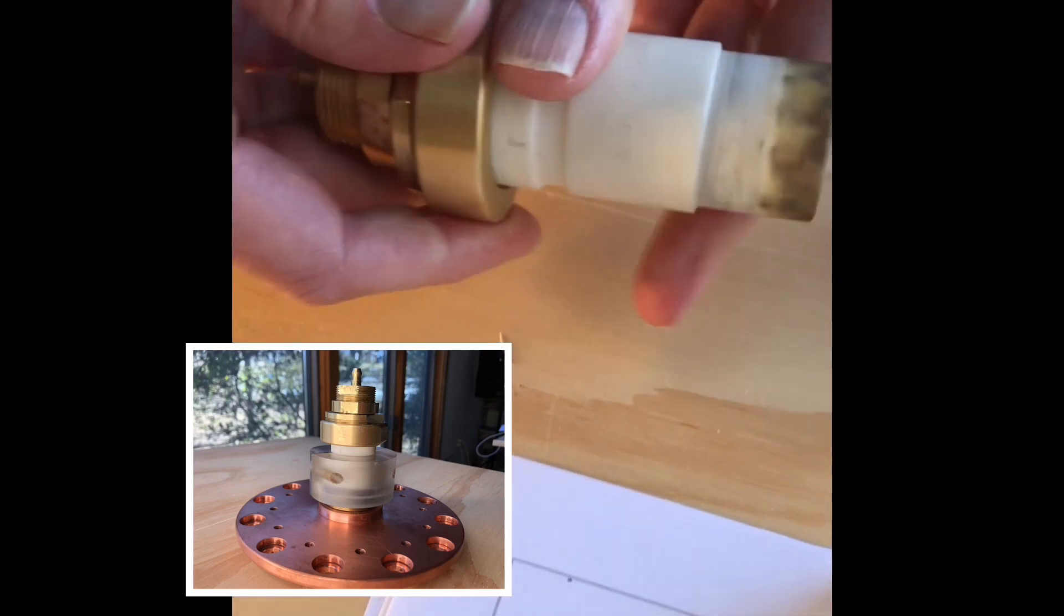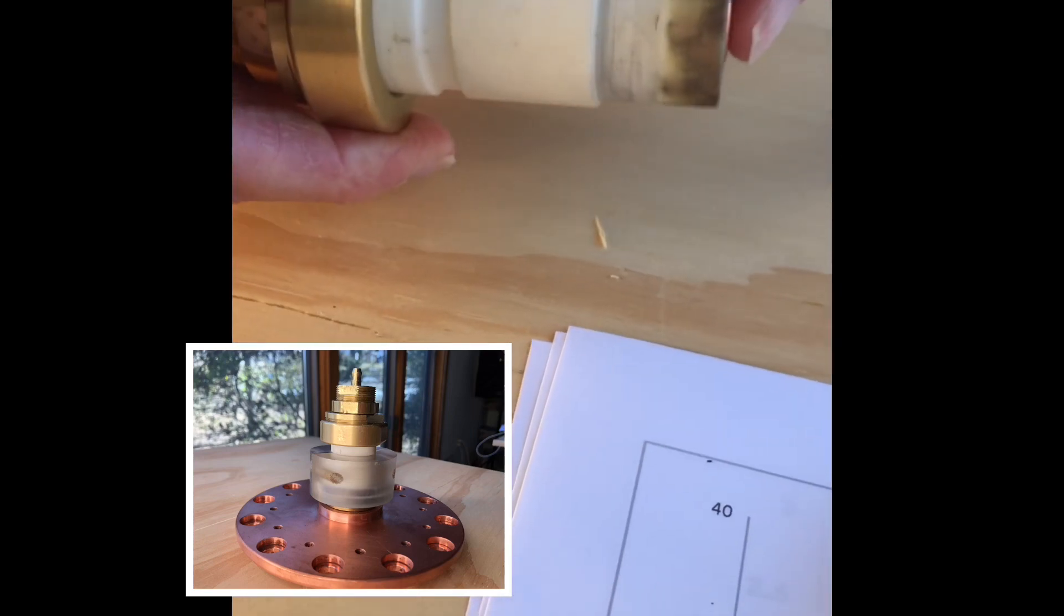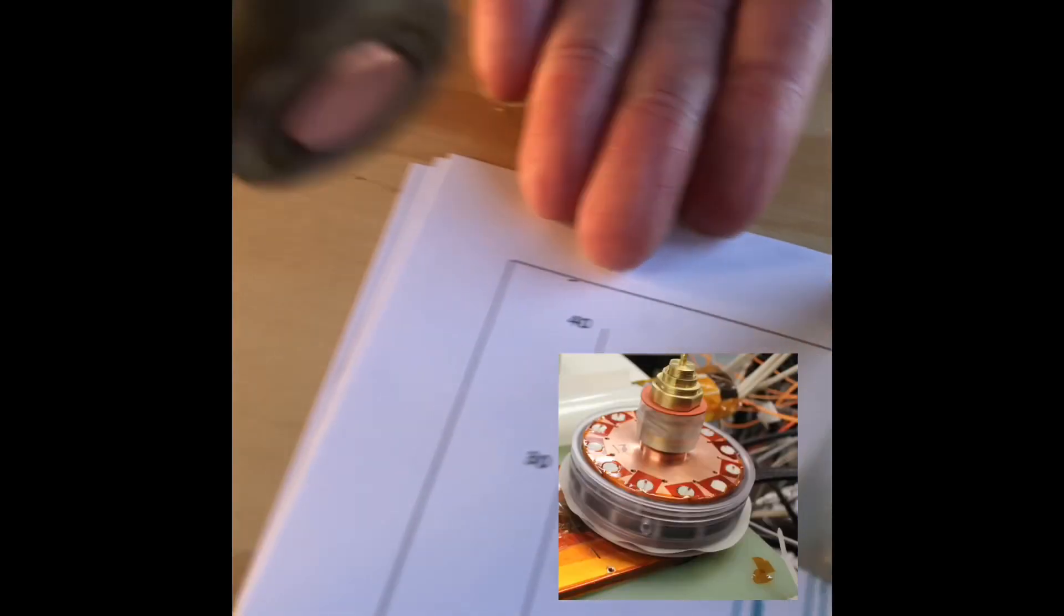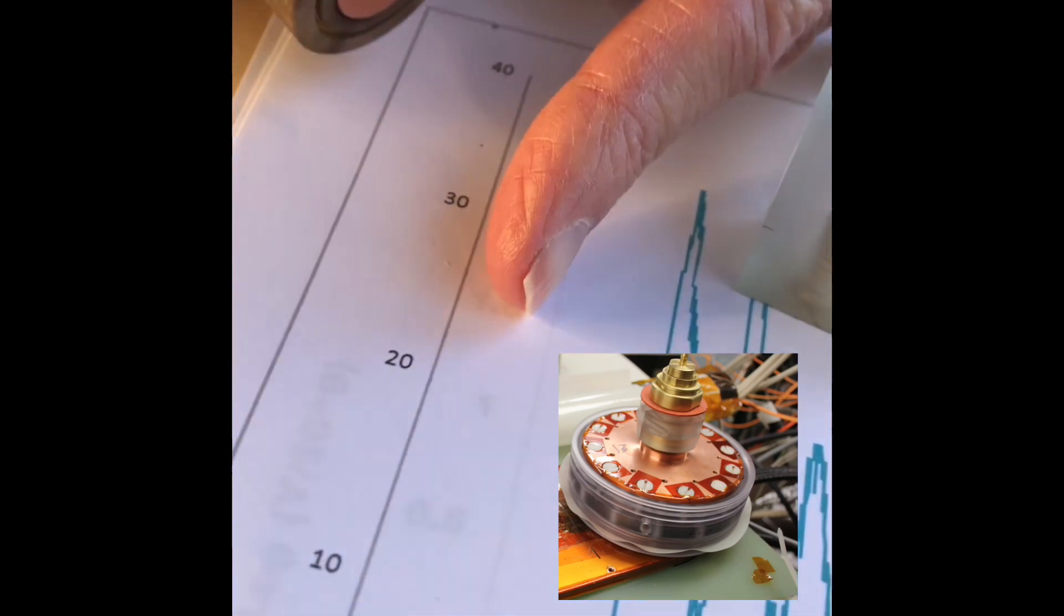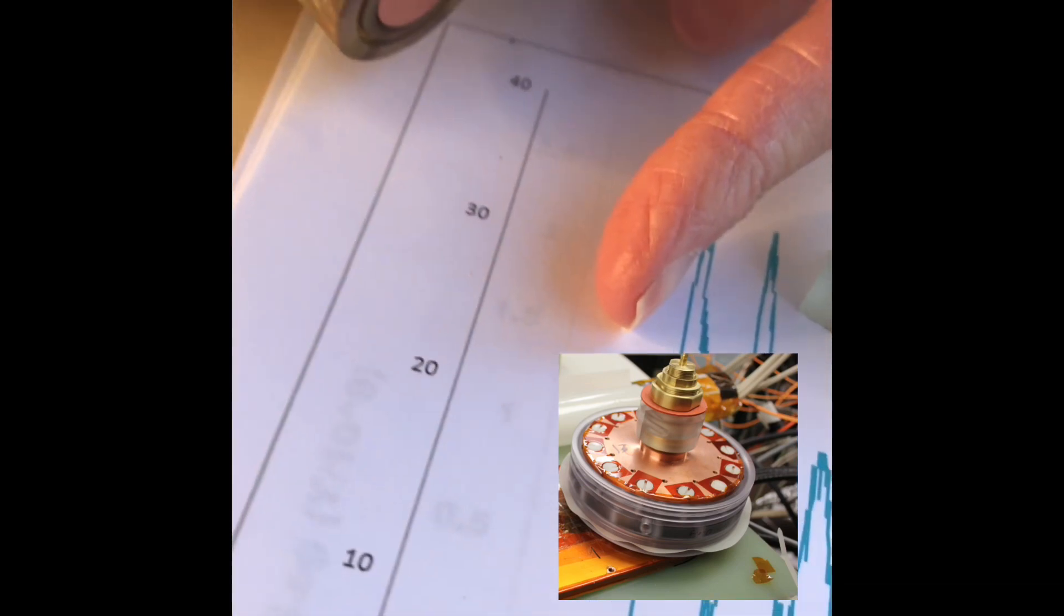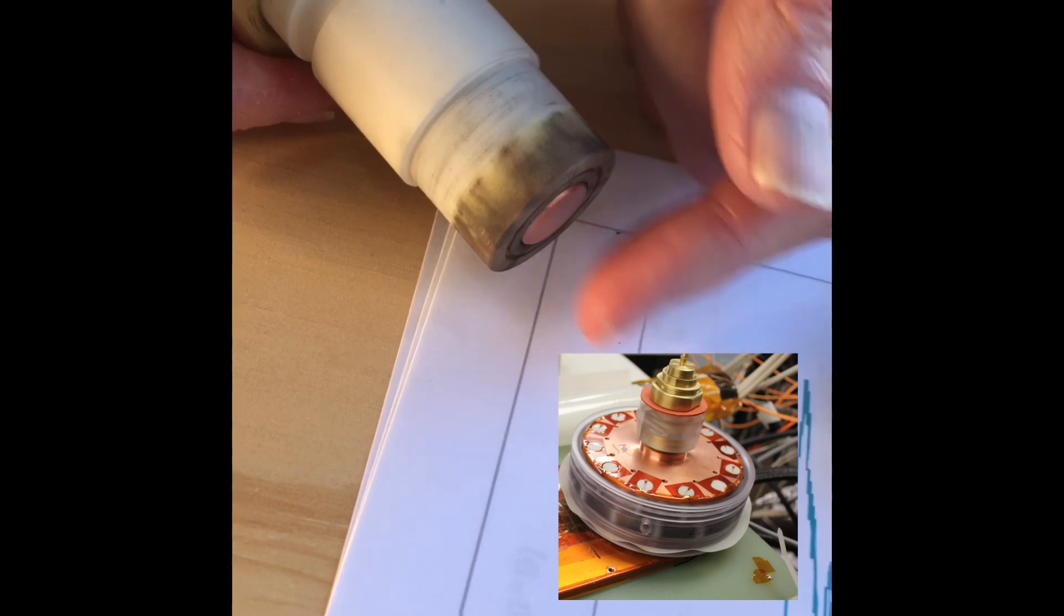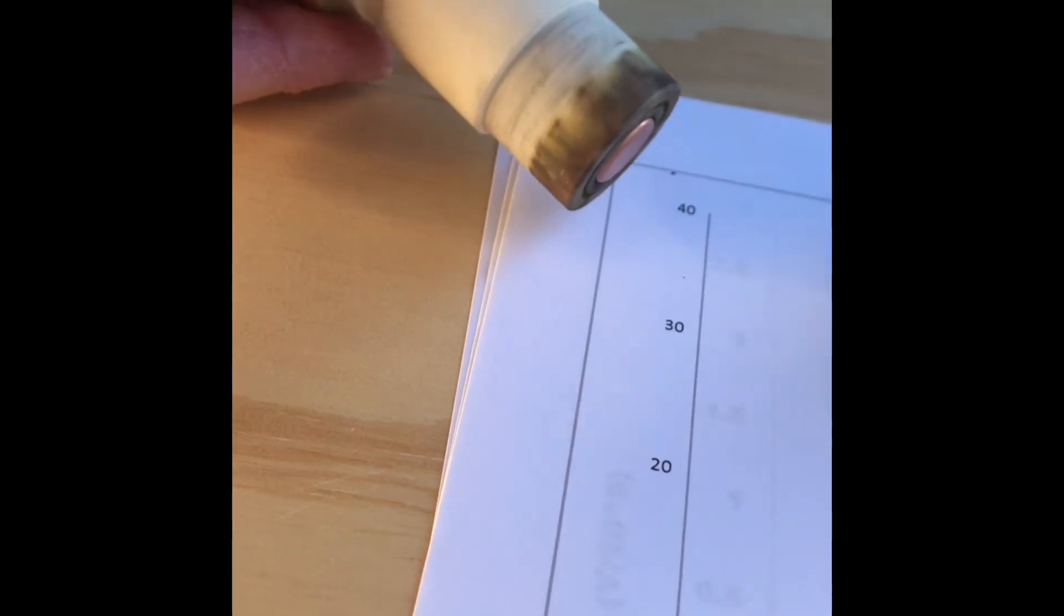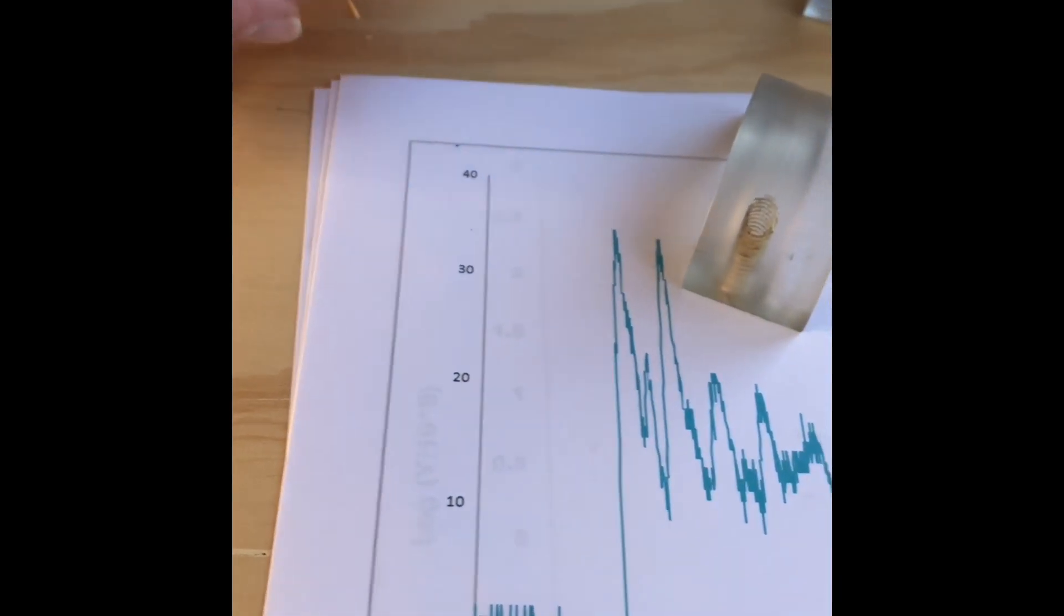The electrode in the spark plug conveys this pulse through the gas to the bottom of the spark plug, which would be over here to the bottom of the switch. And that is supposed to set the current in motion. The current is a positive current that flows to the top plate and from the top plate over to the anode.